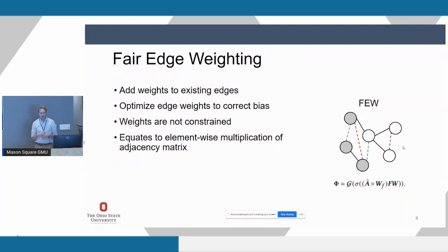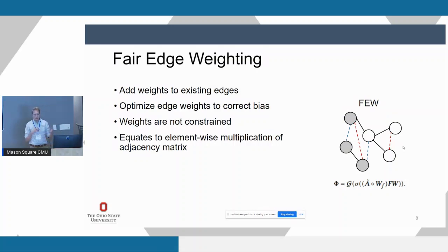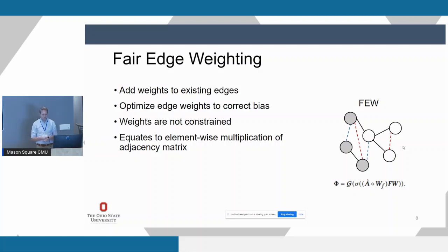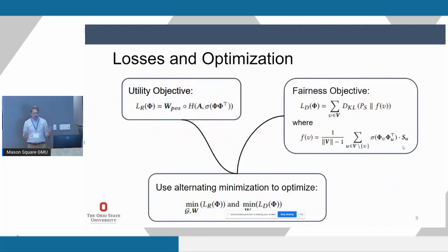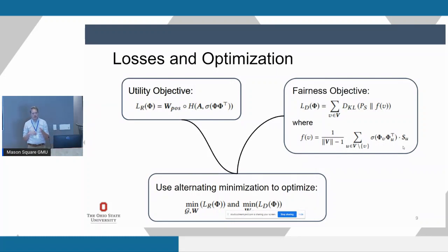Finally, we consider a fair edge weighting method, which adds weights to existing edges and optimizes those weights to correct for bias and make fair predictions. These weights are unconstrained, so they can push or pull features toward or away from nodes — stretching or compressing aspects of the graph. This equates to a simple element-wise multiplication of our adjacency matrix with our fairness weights. Now, how do we optimize these? We have two objectives: a utility objective using link reconstruction loss — the binary cross-entropy H of our adjacency matrix and the reconstructed similarity matrix with a sigmoid applied.